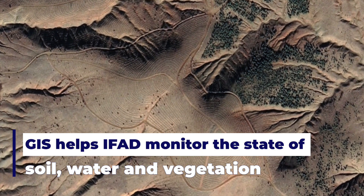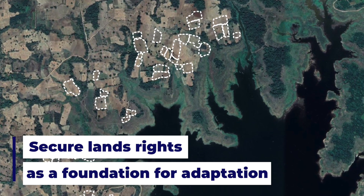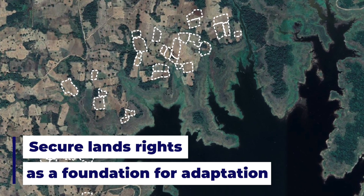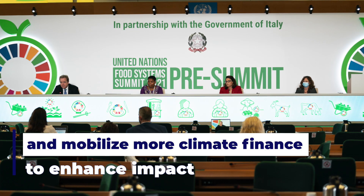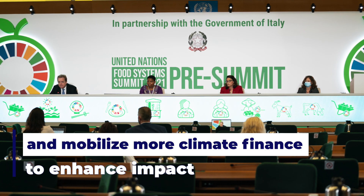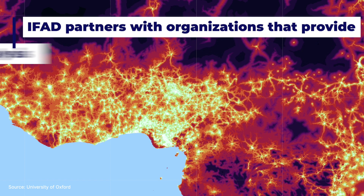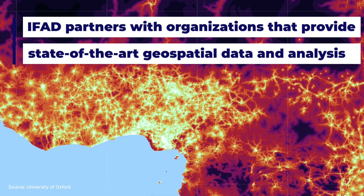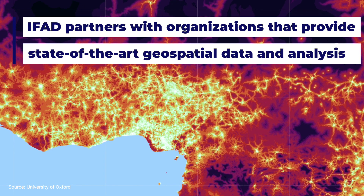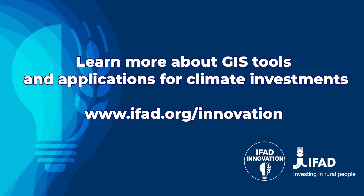GIS helps IFAD monitor the state of soil, water, and vegetation; secure land rights as a foundation for adaptation; and mobilize more climate finance to enhance impact. IFAD partners with organizations that provide state-of-the-art geospatial data and analysis.